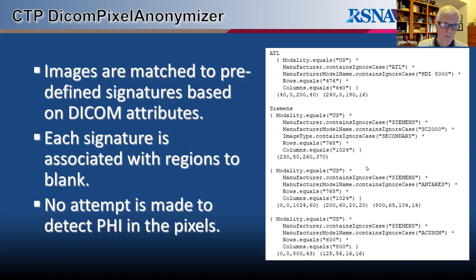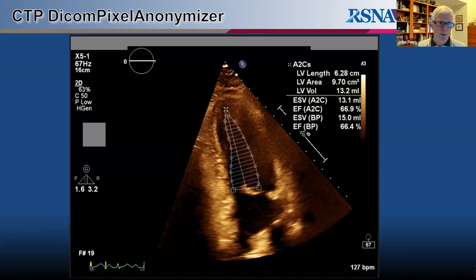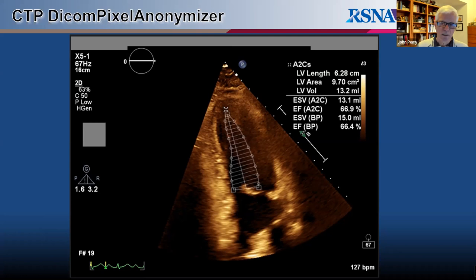This is an example of an image redacted by the DICOM Pixel Anonymizer. In this case, I ran the Pixel Anonymizer with the test attribute turned on so that it blanks in mid-gray — I usually do that when configuring a new signature. Once satisfied, I turn the test attribute off and it blanks in black. That's a top-level walk-through of CTP.